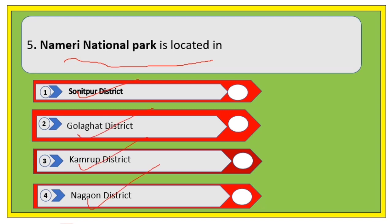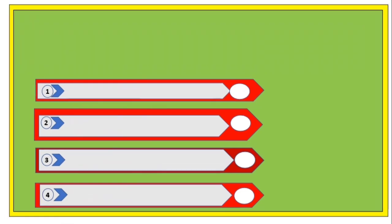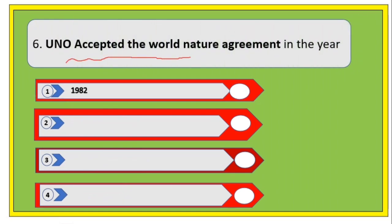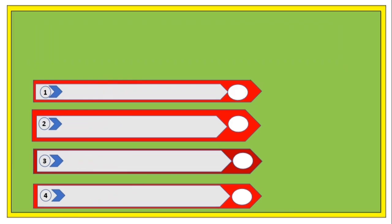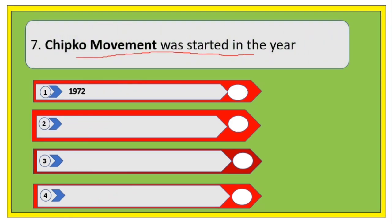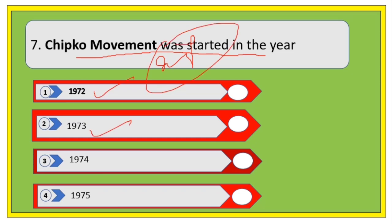The right answer to the next question is 1982. For the following question, options are 1972, 1973, 1974, and 1975, and the right answer is 1972 — which is likely referring to the Stockholm Conference.